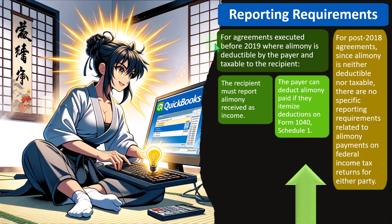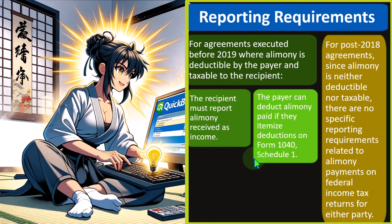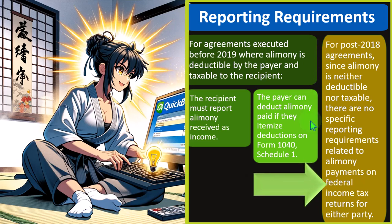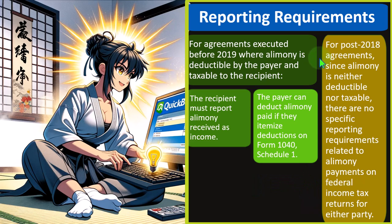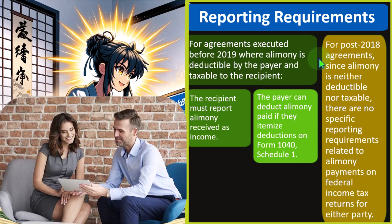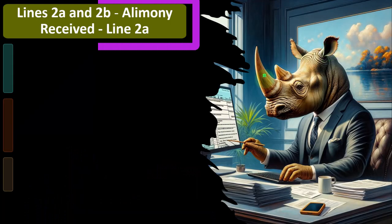We're just looking at the line instructions. This is for agreements executed before 2019. Notice the form — if they itemize deductions on Form 1040, Schedule 1, we're not talking about the Schedule A. For post-2018 agreements, we'll talk about the deductible half later. We're kind of focused on the income side, but you can see the symmetry between the two: if one gets the deduction, the other would have to record it as income. For post-2018 agreements, since alimony is neither deductible nor taxable, there are no specific reporting requirements related to alimony payments on federal income tax returns for either party.